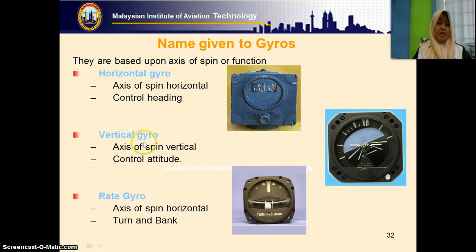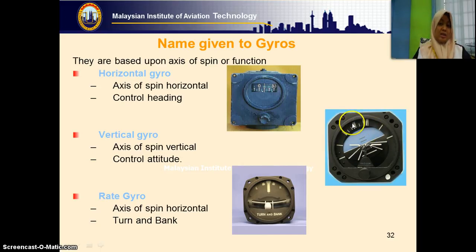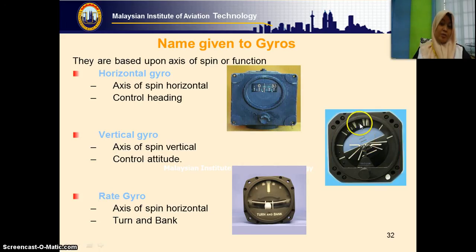Next is the vertical gyro. We use a vertical gyro in the attitude indicator. The attitude indicator provides aircraft pitch — nose up and nose down indication — and also rolling. If you open up this indicator, you will see the gyro inside, and the axis of spin is vertical.